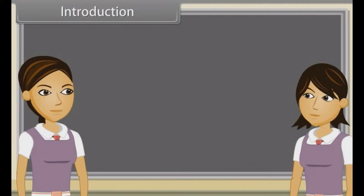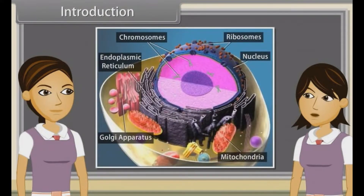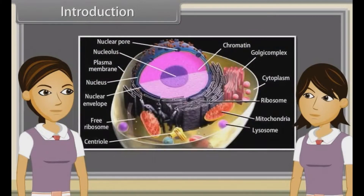We have discussed structure of eukaryotic cells and structure and functions of cell membrane and cell wall already. Now we will discuss structure of endomembrane systems. We will also observe structure of endoplasmic reticulum, Golgi apparatus, lysosomes, vacuoles, mitochondria, plastids and ribosomes.